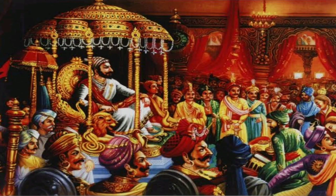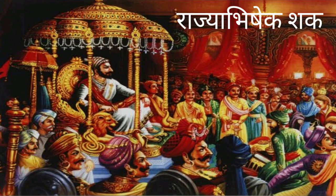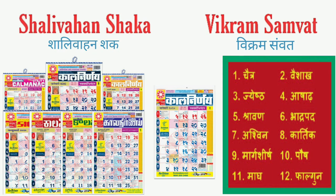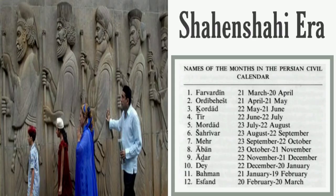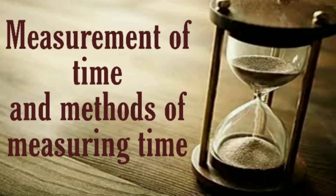These are two of the eras used in India. The founder of Islam, Prophet Muhammad, migrated from Makkah to Madinah, and the Hijri era was started to commemorate this event. The Parsi community in India uses the Shehanshai era. This is how different methods of measuring time developed.